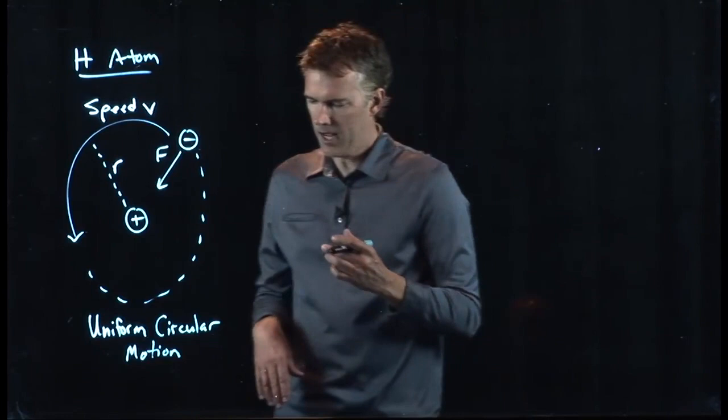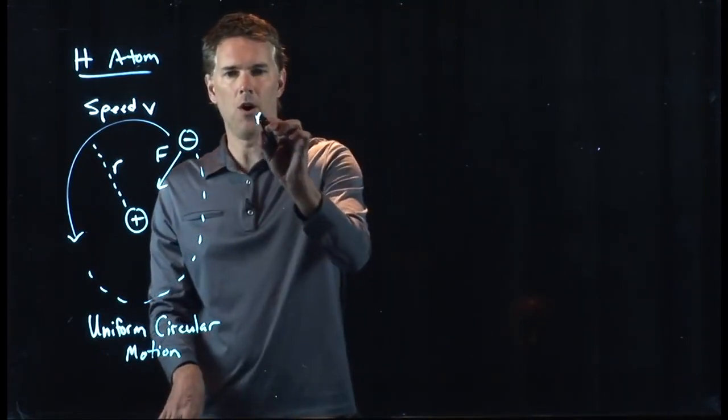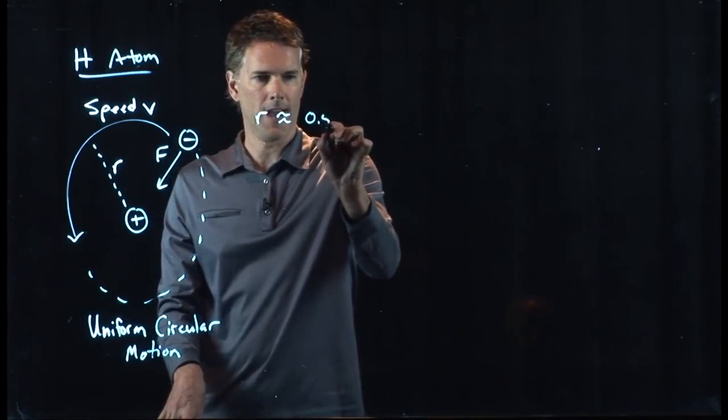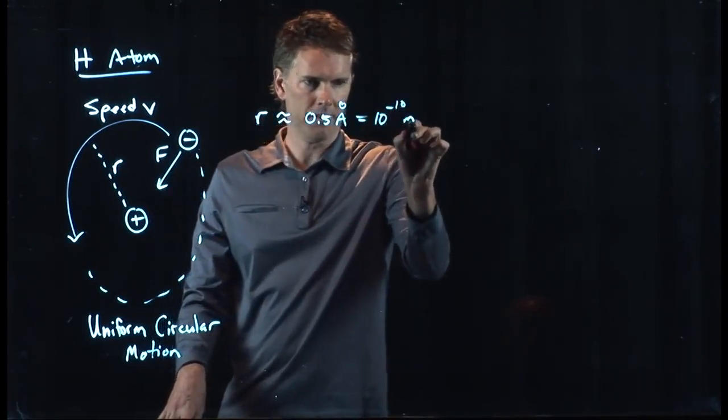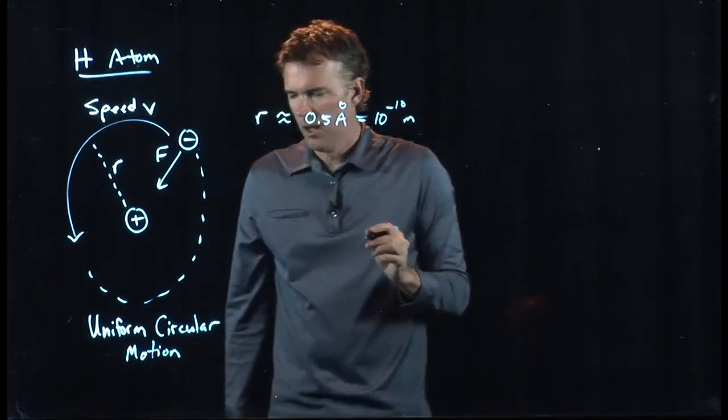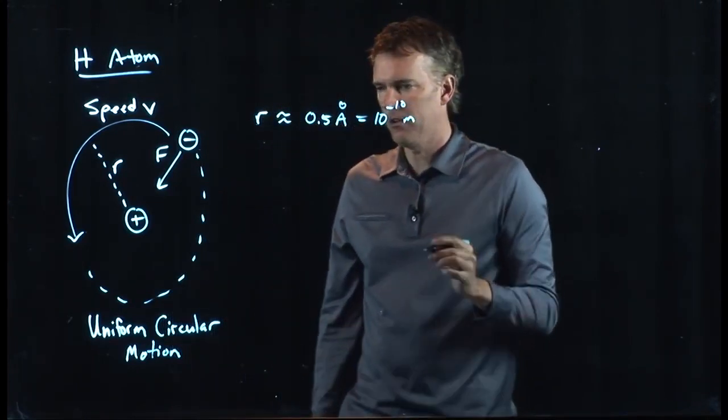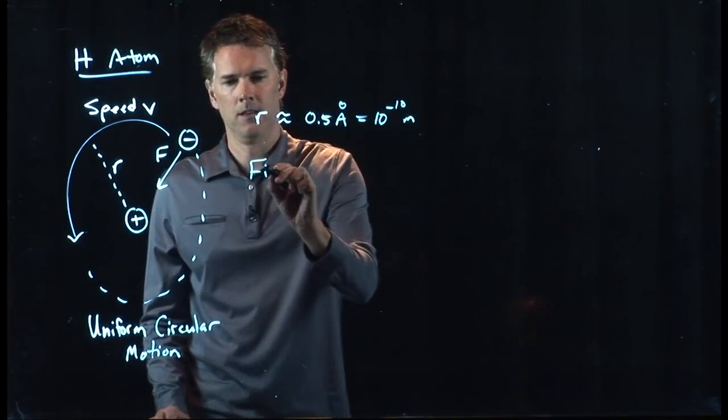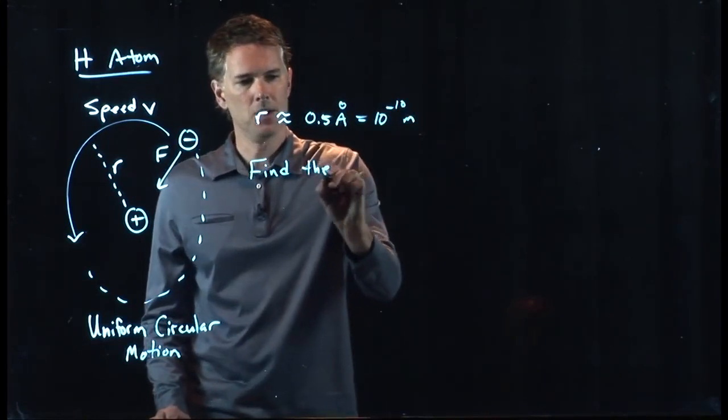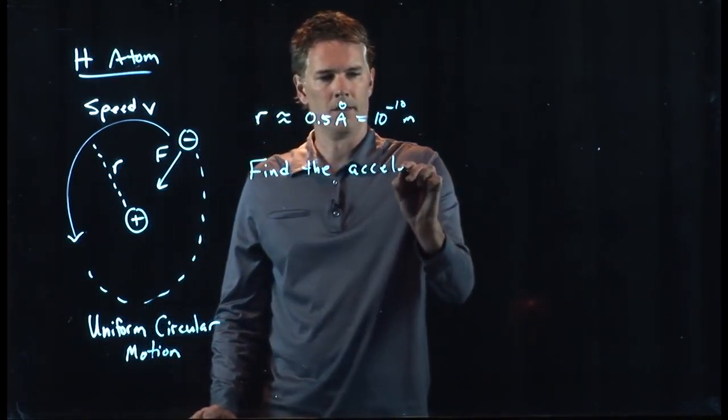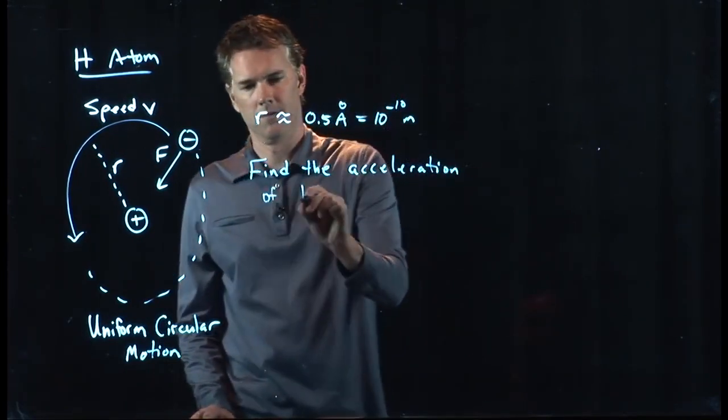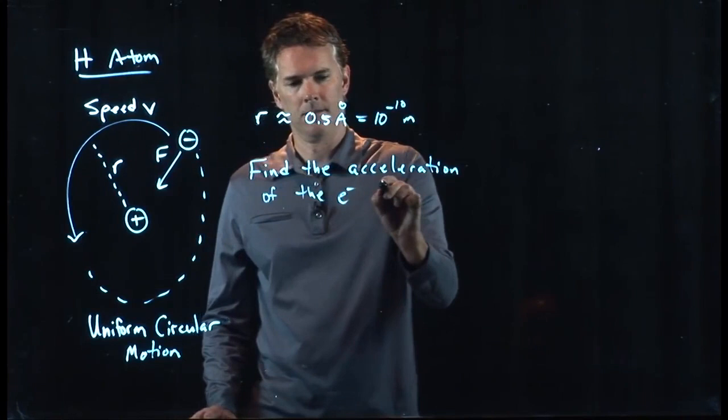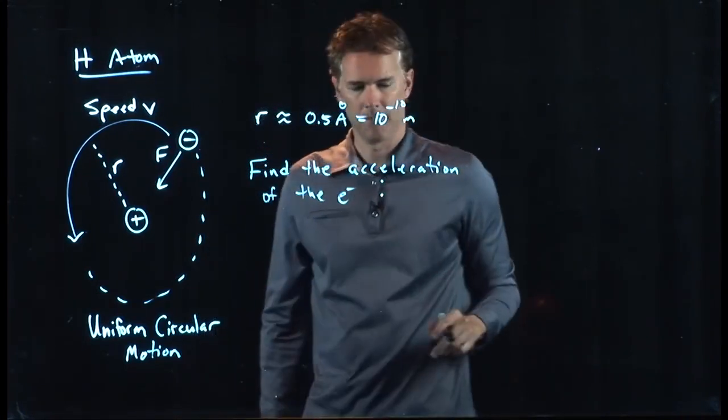So in a hydrogen atom, let's put in some numbers. R is about half an angstrom, 10 to the minus 10 meters. Let's calculate the acceleration of the electron. How do we do that?